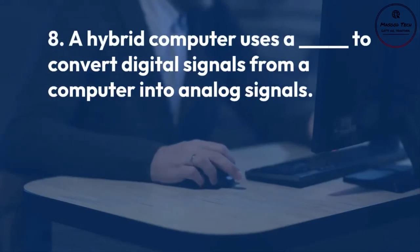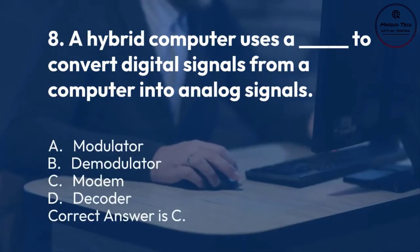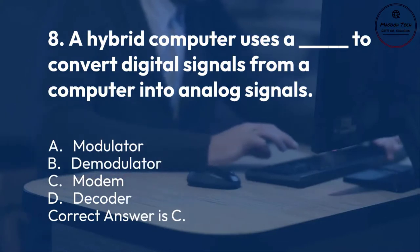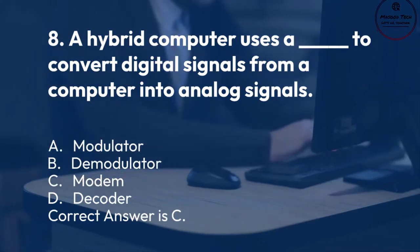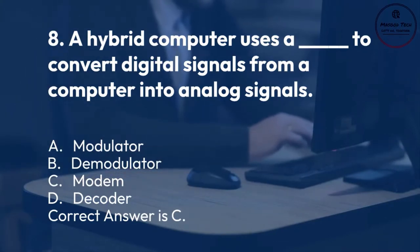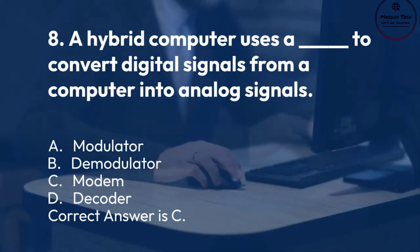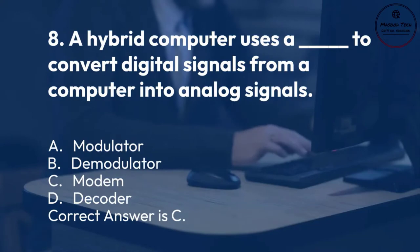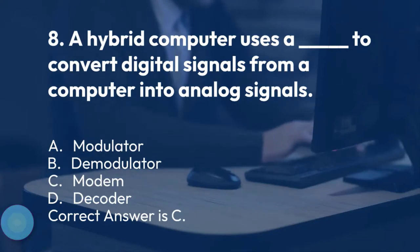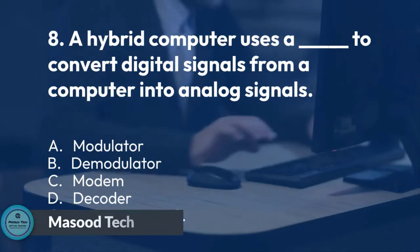Number 8. A hybrid computer uses a blank space to convert digital signals from a computer into analog signals. A. Modulator. B. Demodulator. C. Modem. D. Decoder. Correct answer is C.